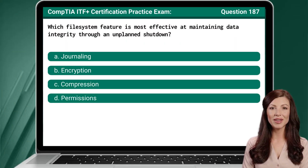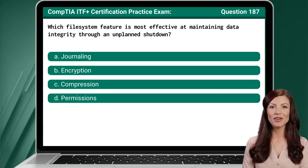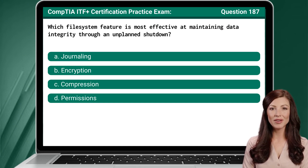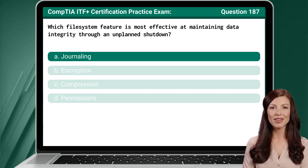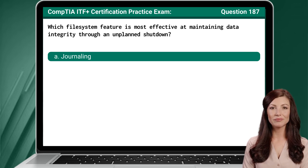Question 187. Which file system feature is most effective at maintaining data integrity through an unplanned shutdown? The answer is A: Journaling.